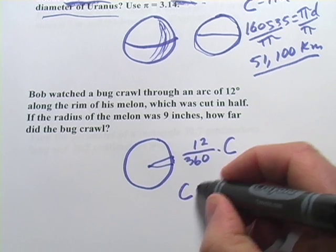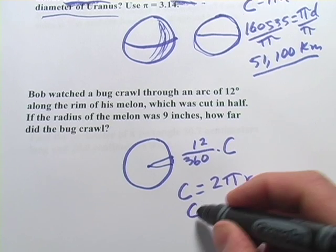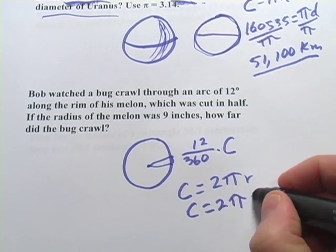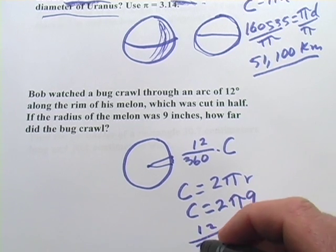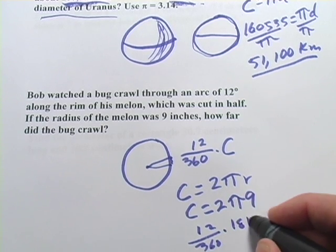So to figure out the circumference, we're going to use 2 pi r, and in this case, r, the radius is 9 inches. So that would be 12/360ths times, well, 2 times 9 is 18, times 18 pi.